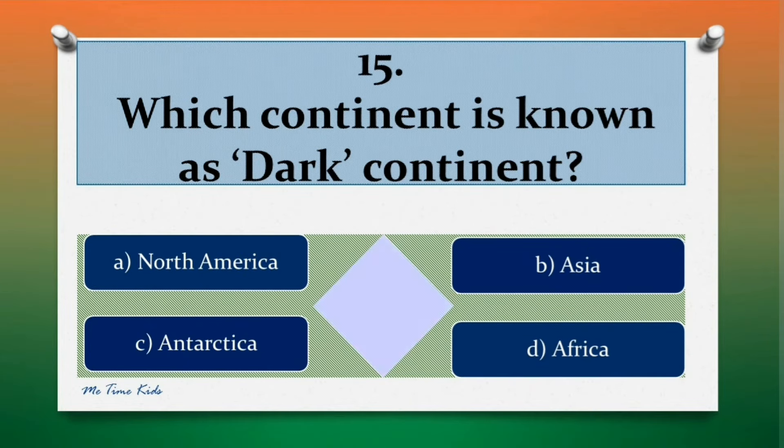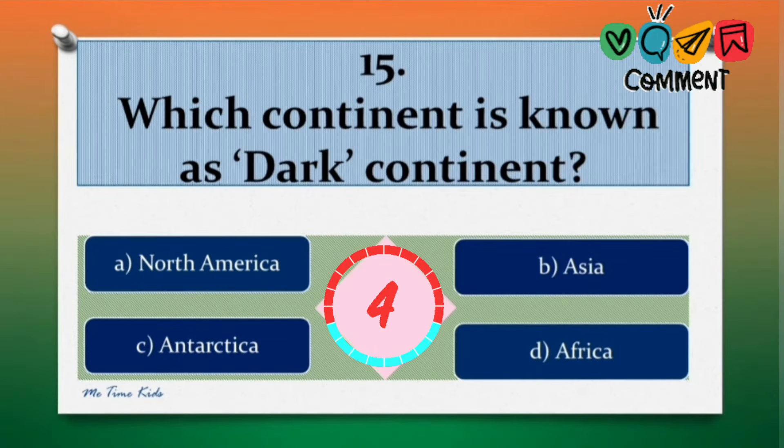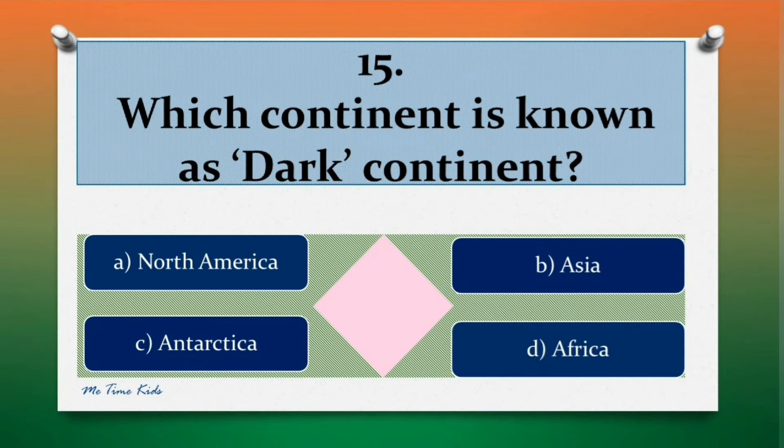Question 15. Which continent is known as dark continent? Options are: a. North America, b. Asia, c. Antarctica, d. Africa. Correct answer is d. Africa.